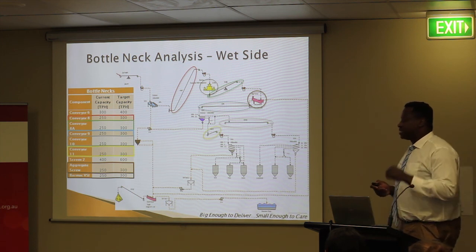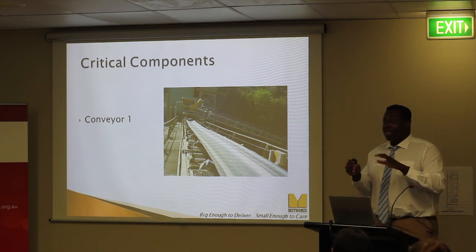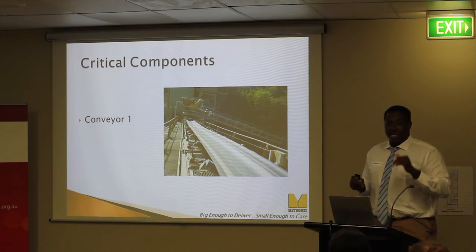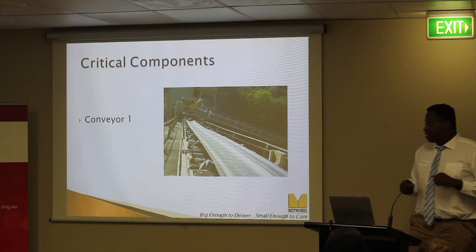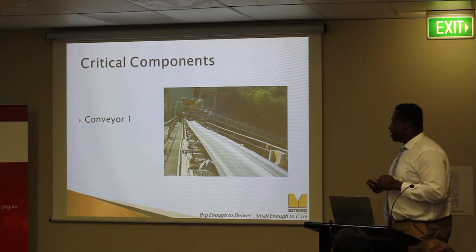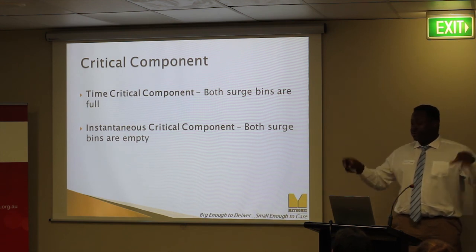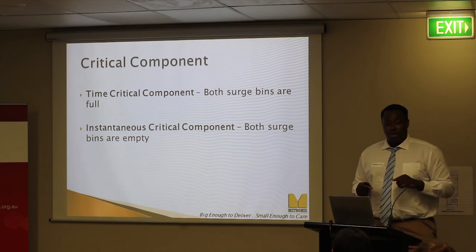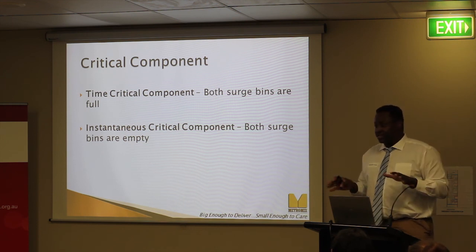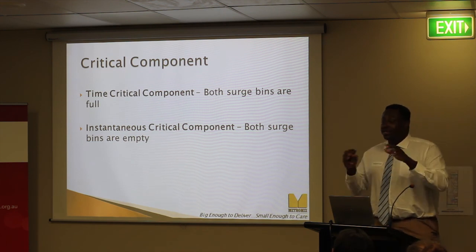Once I identified my bottlenecks, I looked at identifying critical components. In this project, I define a critical component as any component that, if it were to fail, would stop the whole system from producing. In my analysis I only identified one critical component: conveyor belt 1, which has the role of transferring the raw feed into the system. I further refined this into time critical — if both surge bins were full and conveyor belt 1 failed, the system could operate for approximately 40 minutes before stopping — and instantaneous critical, where if both surge bins were empty, the system would have to stop immediately.